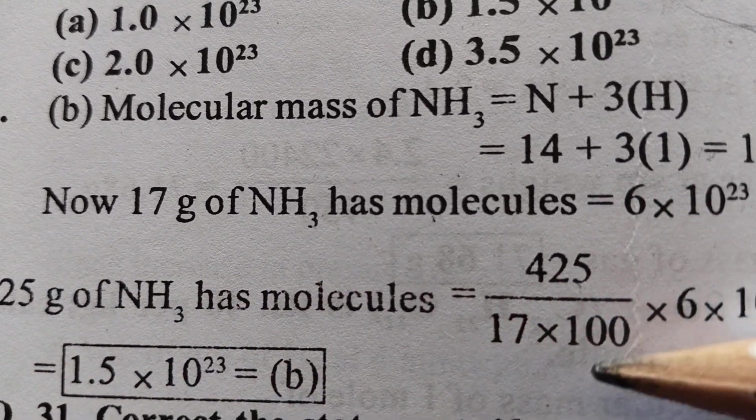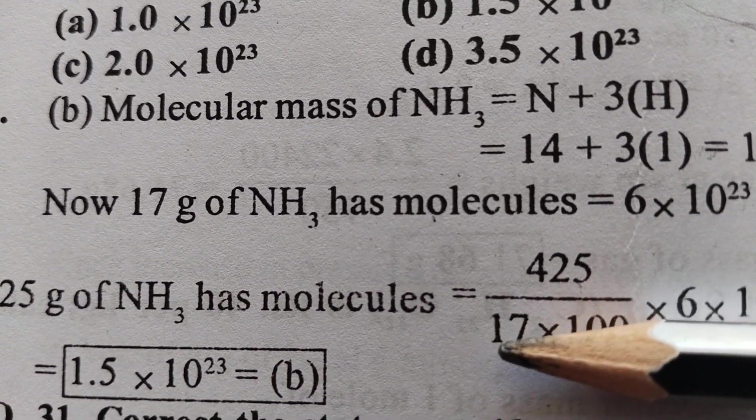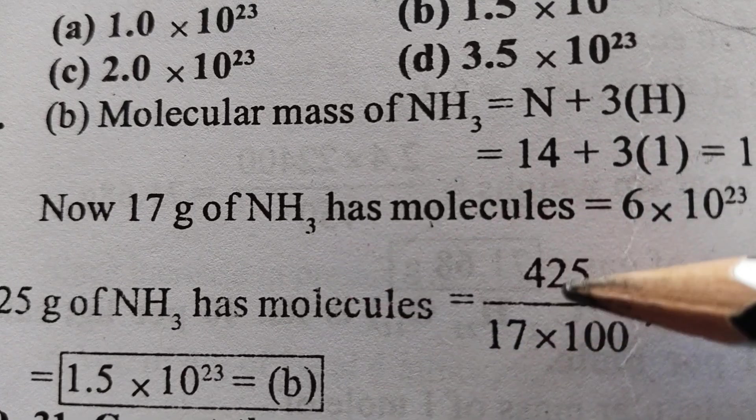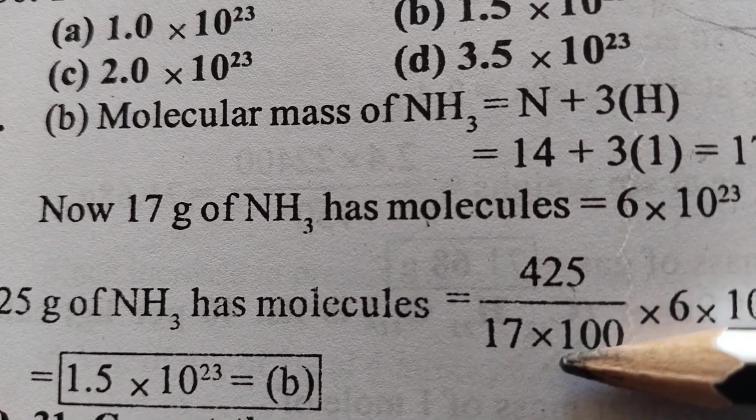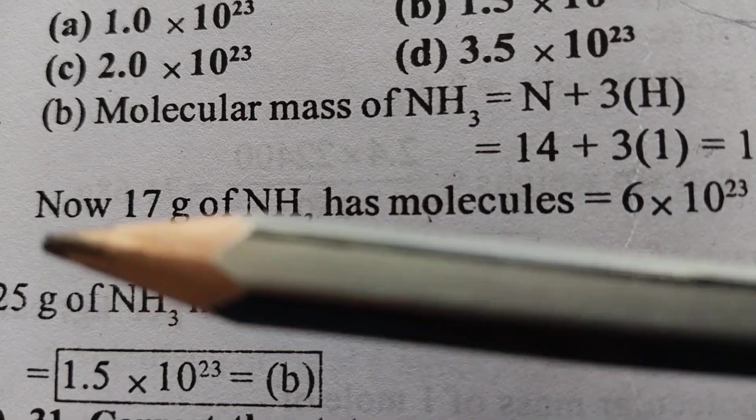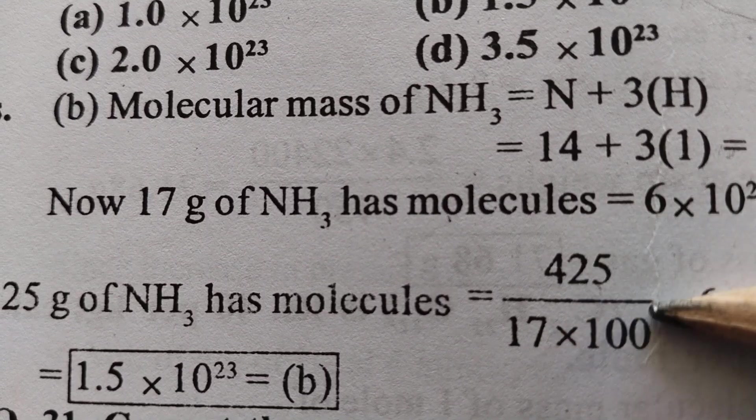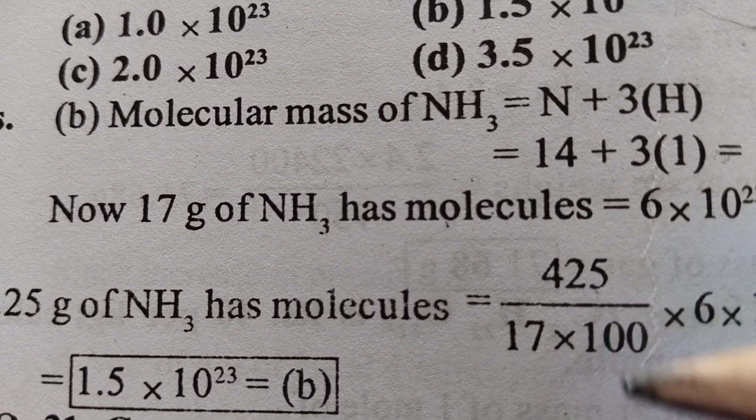17 × 100. So if you multiply numerator and denominator with the same number, there is no change in value. So to avoid the point, what he has done: he has multiplied with 100, both numerator and denominator.